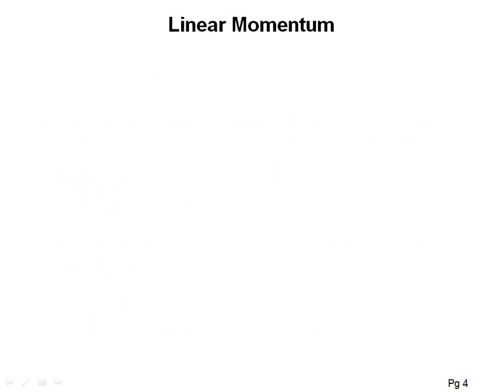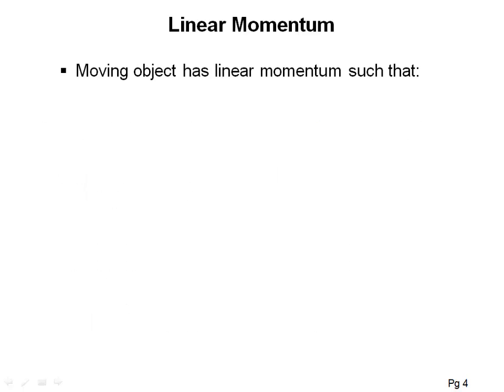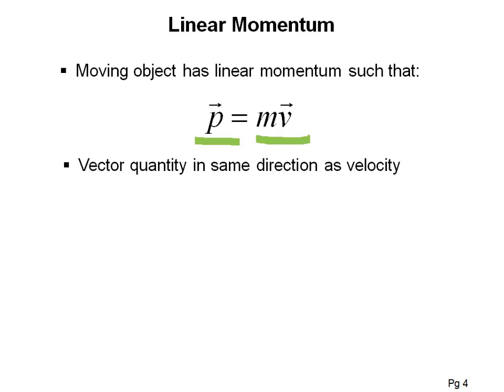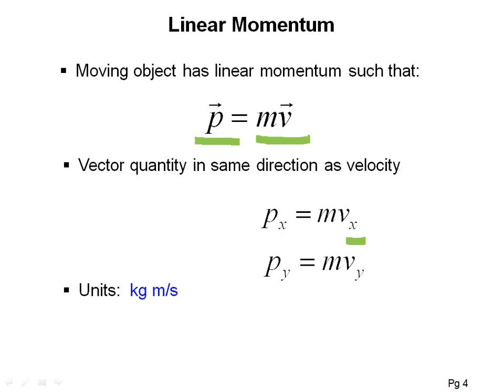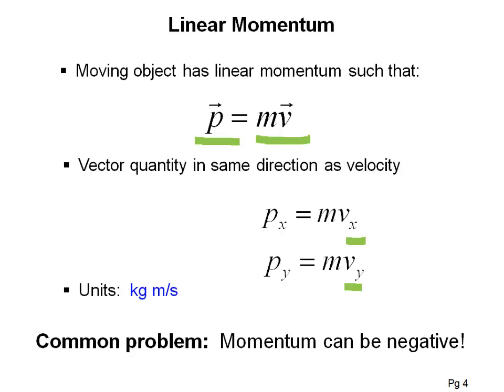We'll start with defining linear momentum. Any object that's moving has a linear momentum. We use the letter P to describe the momentum, and it equals the mass times the velocity. This is a vector quantity and it's in the same direction as the velocity. The units are kilogram meters per second. I like to think about this in terms of its x and y components, which just depend on the x and y components of the velocity. Keep in mind that momentum can be negative.